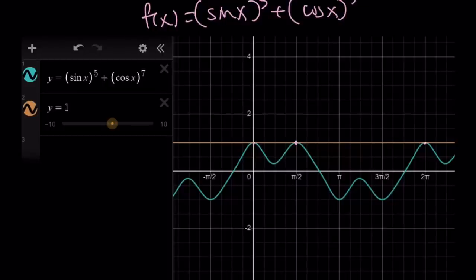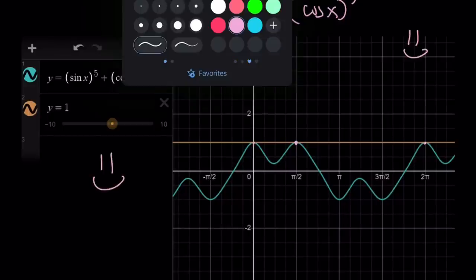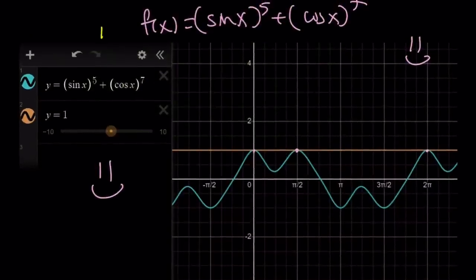Anyways, the only solutions are zero and pi over two if you're looking for something between zero to two pi. And this brings us to the end of this video. Thank you for watching. I hope you enjoyed it. Please let me know. Don't forget to comment, like and subscribe. I'll see you tomorrow with another video. Until then, be safe, take care, and bye bye.